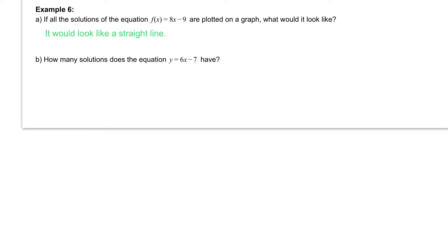The second question, letter B, says, how many solutions does the equation y equals 6x minus 7 have? Well, y equals 6x minus 7 is a straight line. So if we think about that straight line, it's going to look like this.